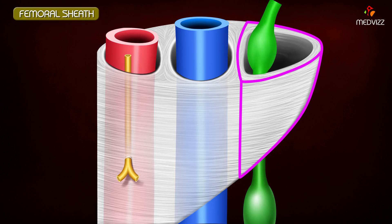This lymphatic compartment is called the femoral canal, and it is the smallest of the three compartments of the femoral sheath.